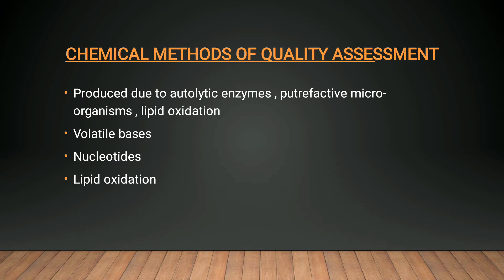In quality assessment there is the chemical method. In the chemical method, we detect the changes which occur mainly in fishes after death. In fish spoilage we have studied that after death there will be some kind of deterioration: first glycolysis, then volatile bases and nucleotide degradation occurs due to which color changes occur, and then lipid oxidation. By chemical analysis also we can detect the kind of spoilage occurring.